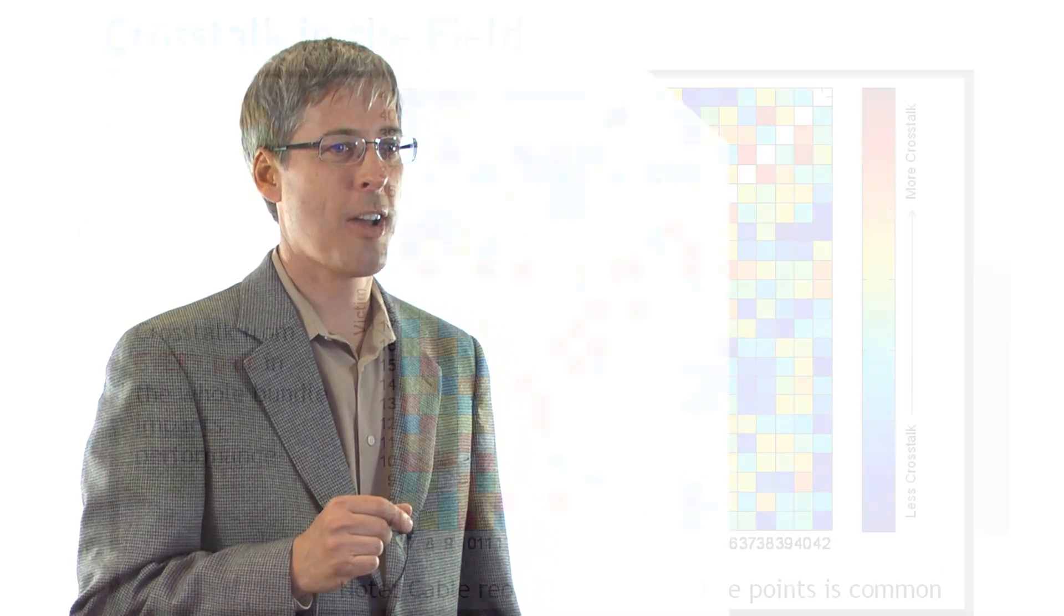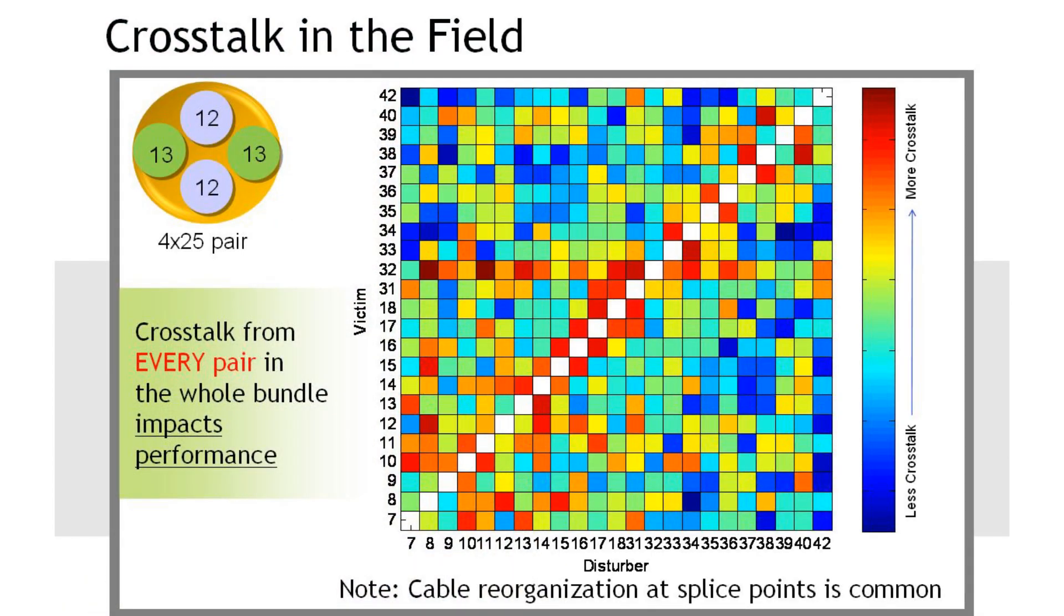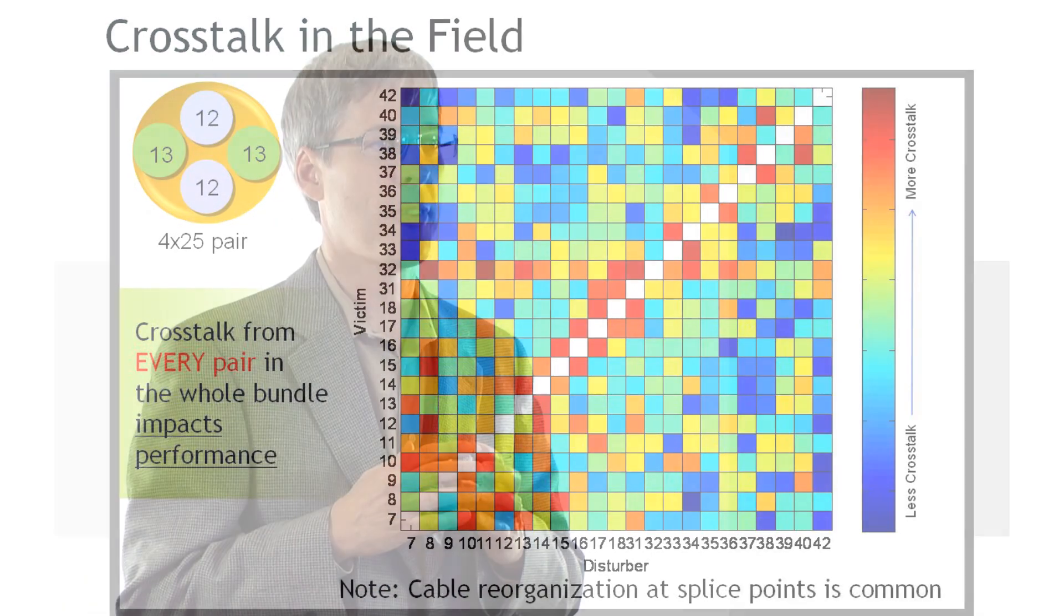Econos node-scale vectoring technology dynamically analyzes and cancels crosstalk across a node of up to 384 ports, meeting the deployment requirements of the world's most exacting service providers.